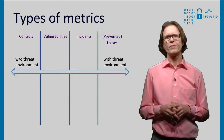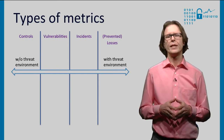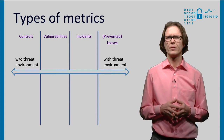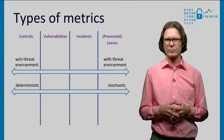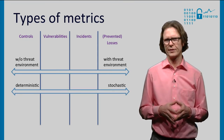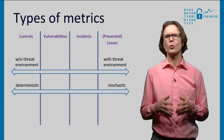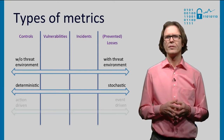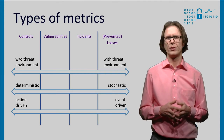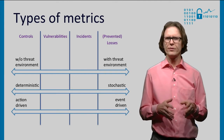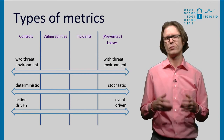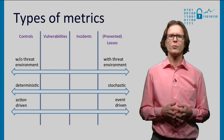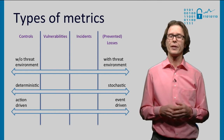To conclude, we have classified different types of security metrics in four categories. Each category relates differently to the threat environment. Controls exclude the threat environment. Vulnerabilities keep it static. These metrics are therefore deterministic. Incidents and prevented losses are stochastic, as they are driven by unknown attacker behavior as well as the actions of the defender. Similarly, controls are mainly driven by actions — for instance, acquiring a new firewall — while incidents and losses are driven by events, for example a data breach. Now that the framework is in place, we can use it to better understand existing metrics, and that is the topic of the next lecture.